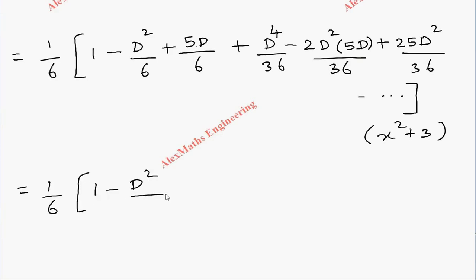D²/6 is okay, 5D/6 is okay, and this one D⁴ we don't want, D³ also we don't want. We keep 25D²/36. Apart from this all the other terms we ignored because its differentiation will become zero.